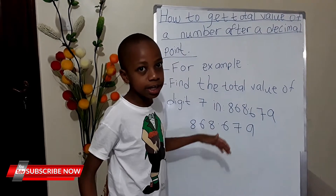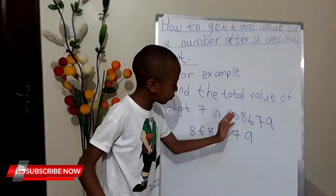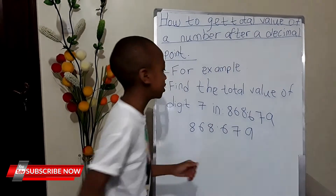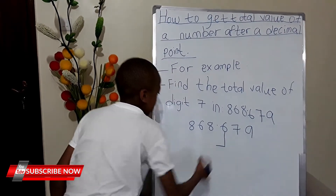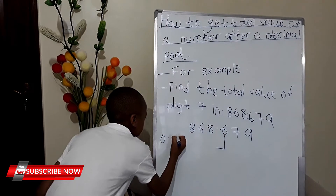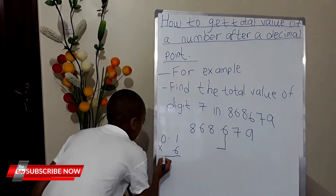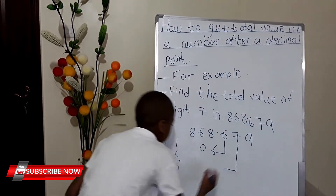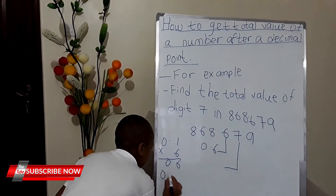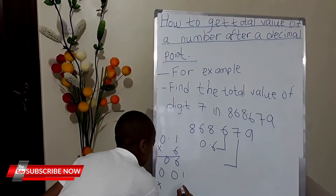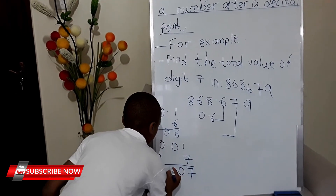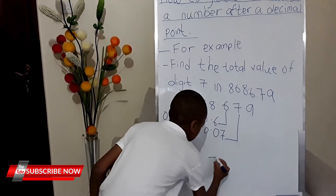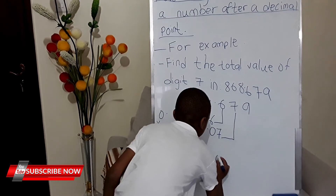Here is the difference with the normal total value — the normal total value only starts from the right side, but this one with the decimal point you start from right to left. So if the first digit is in the tenths, tenths is 0.1, you multiply it by 6, and you get 0.6. Then you go to the second digit which is in the hundredths, so hundredths is 0.01 multiplied by 7, and your answer is 0.07.